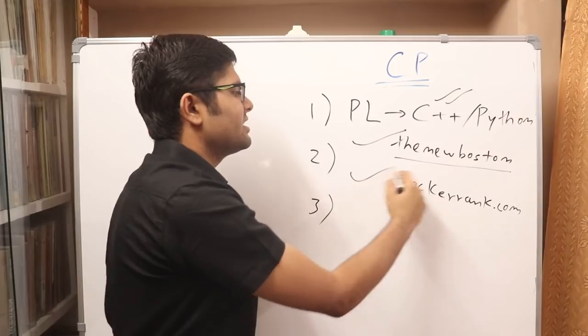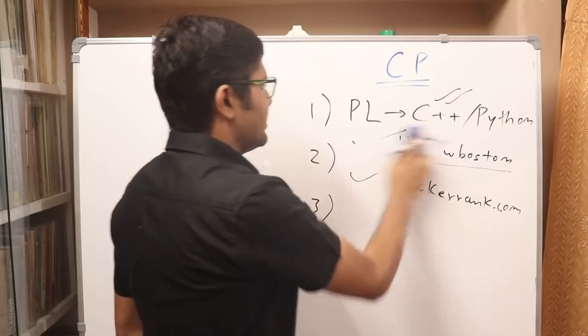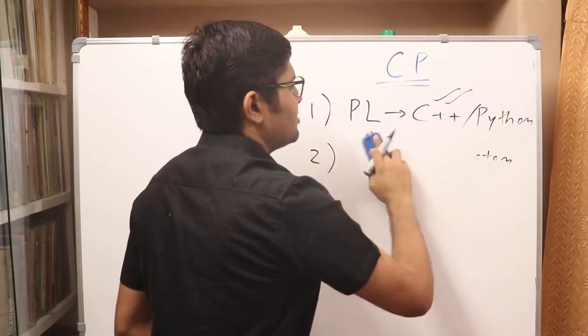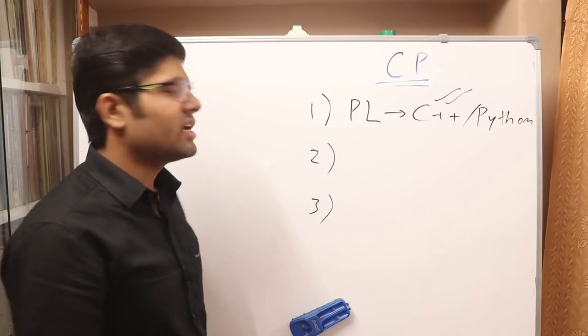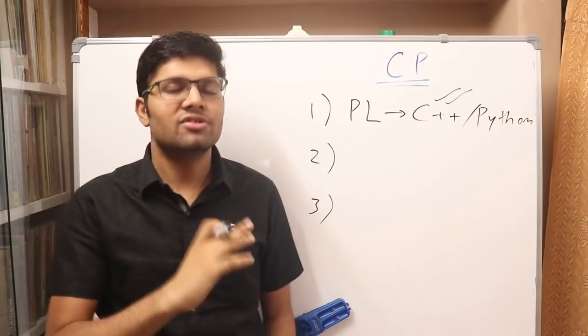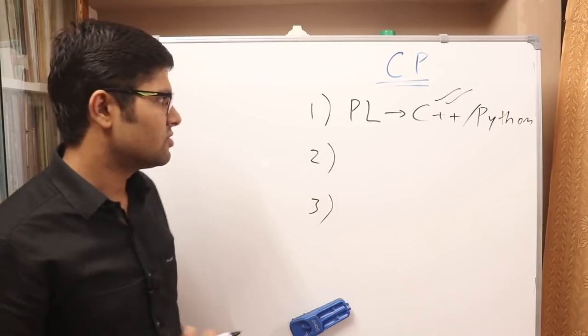So this is the first step that become good at one programming language. How you should do that: first watch videos from this channel and then try to solve the C++ track on hackerrank.com. This is a very good way of doing that. Next, you have to become a coding ninja, you have to become someone who is very good and very fast at problem solving. You don't necessarily have to be a great coder, you don't necessarily have to be a great algorithmist, but you have to become a great coder.